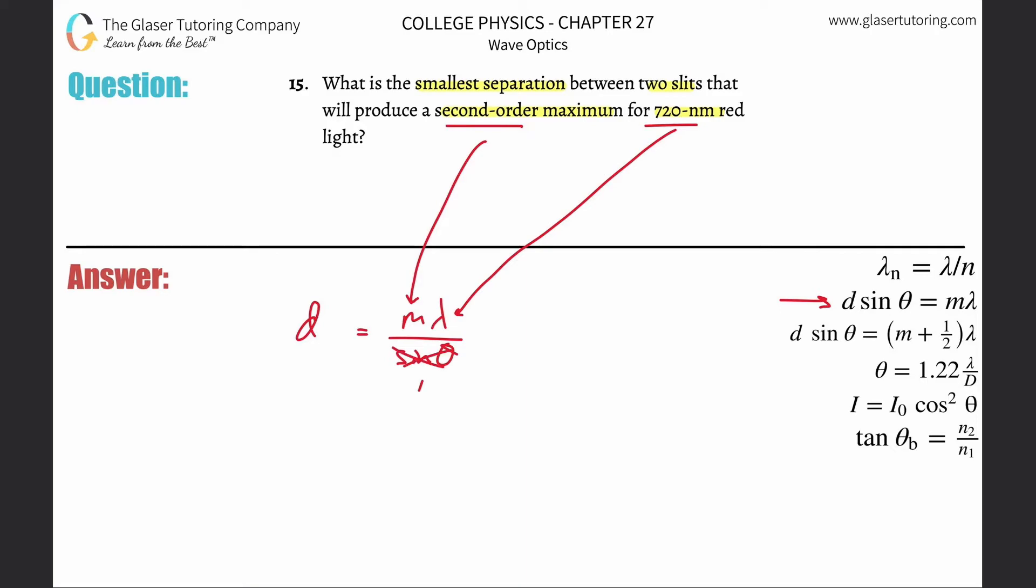You can cross this out and plug in 1, or say the largest value should occur at an angle of 90 degrees. Both come to the same conclusion. This is going to be 2 multiplied by 720 nanometers. Careful, we need that in meters. Then divide by sine of the angle - 90 degrees. That's it.